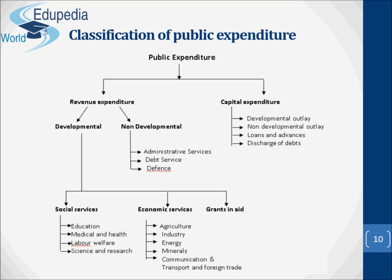Revenue budget or revenue account is related to current financial transactions of the government, which are of a recurring nature. Revenue budget consists of the revenue receipts of the government and the expenditure made from these revenues. Revenue account deals with taxes, duties, fees, fines and penalties, revenue from government estates, receipts from government commercial concerns and other items. Revenue receipts include receipts from taxation, profits of enterprise, other non-tax receipts like administrative revenue, gifts, grants, and so on. Revenue expenditure includes interest payments, refund expenditure, major subsidies, pensions, and so on.